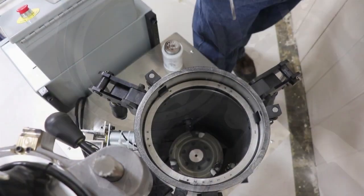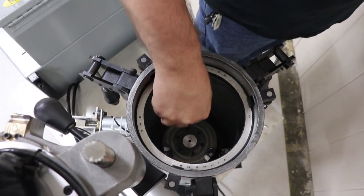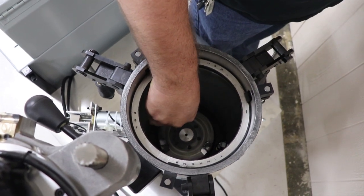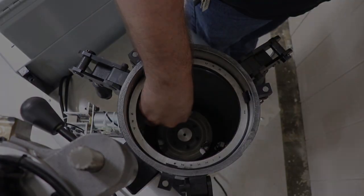Utilize the screwdriver to loosen any asphalt debris from the floor of the compaction chamber. Then vacuum any loose debris.